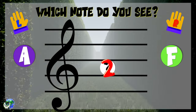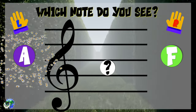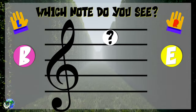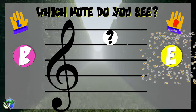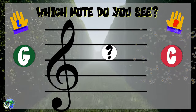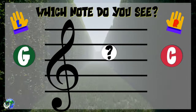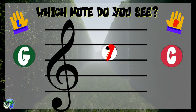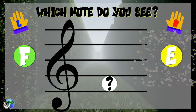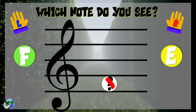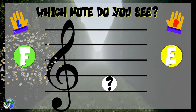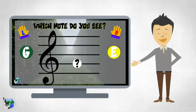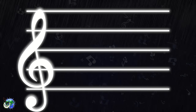Which note do you see? 3, 2, 1 — A. Which note do you see? 3, 2, 1 — E. Which note do you see? 3, 2, 1 — C. Which note do you see? 3, 2, 1 — F.